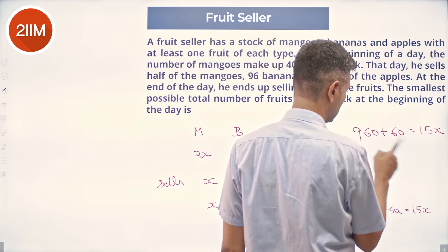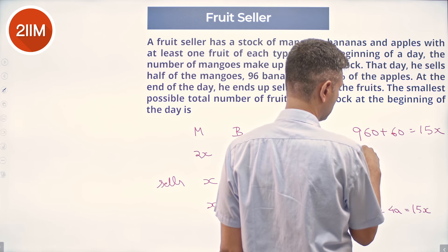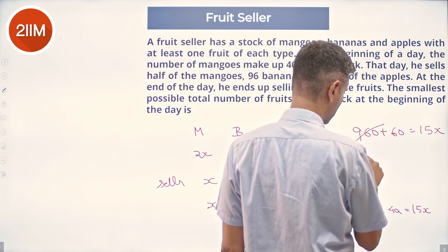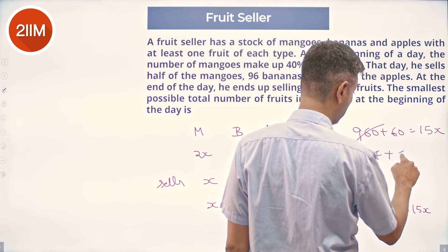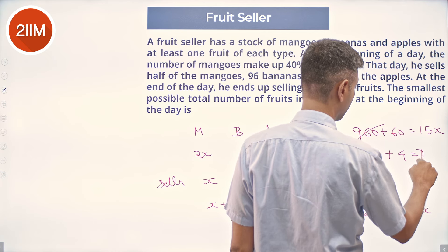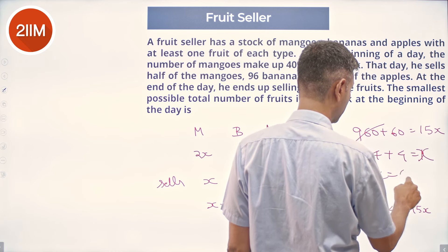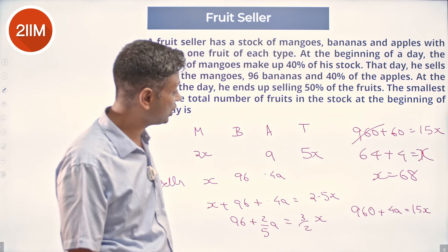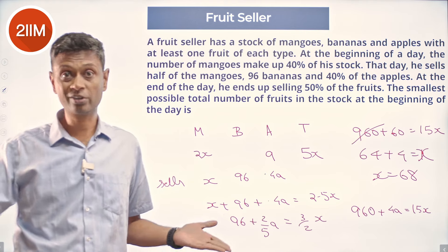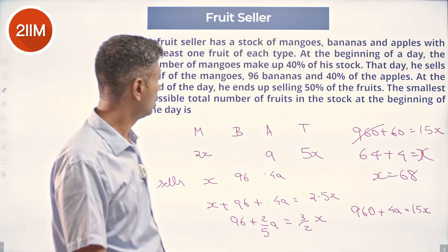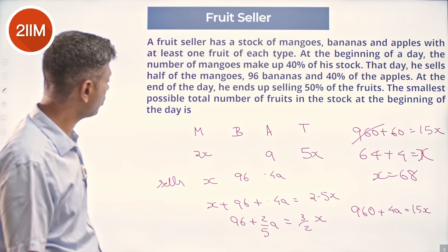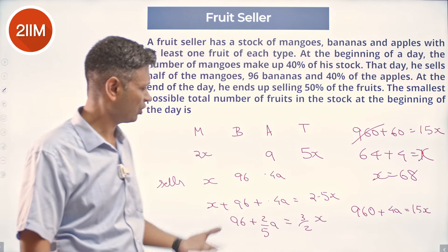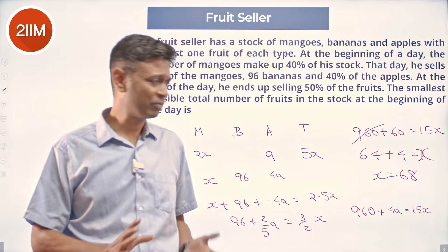960 divided by 15 is 64, plus 4 equals 68, so x is 68. 5 times 68 is 340. That works, nothing short of this will work. The smallest possible total number of fruits is 68 times 5, which is 340.